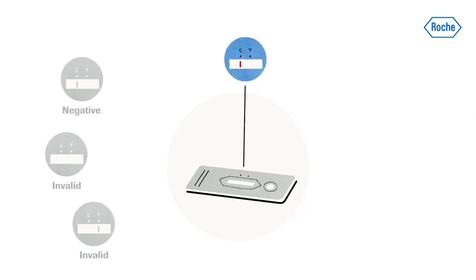In the case of a positive result, a colored line appears in the lower section of the result window. This is the test line T. Even if a test line is very faint or not uniform, the test result should be interpreted as a positive result.